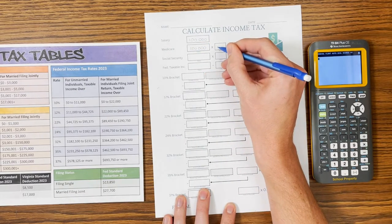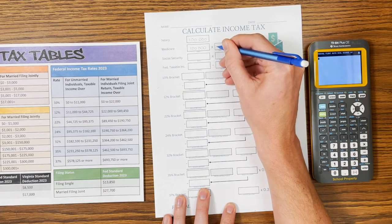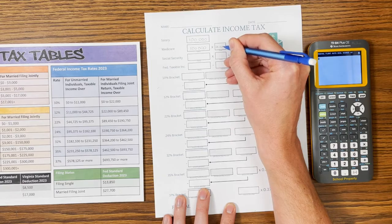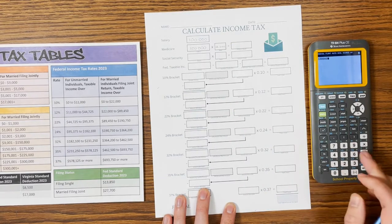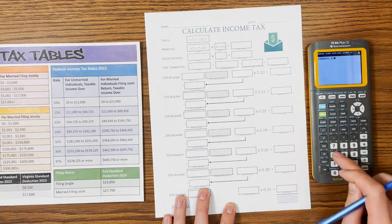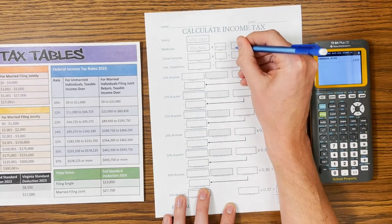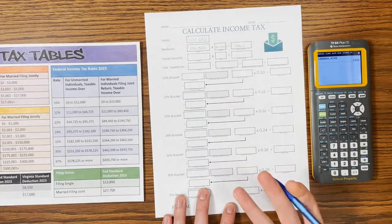Now the rate for Medicare is 1.45%. So we're going to multiply by 0.0145. And when you do that, $100,000 times 0.0145, you get $1,450. So that's how much we owe in Medicare tax.